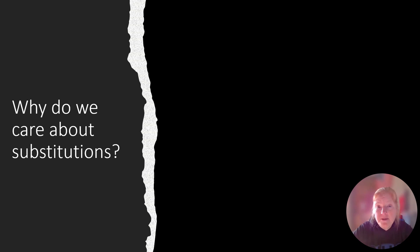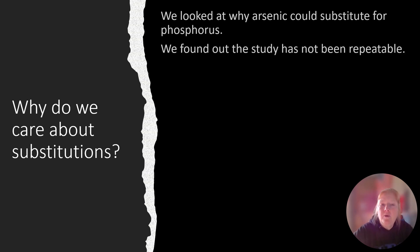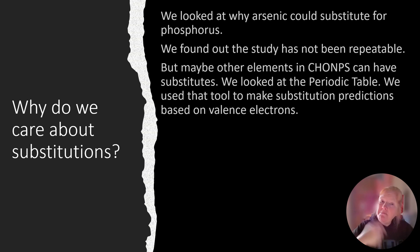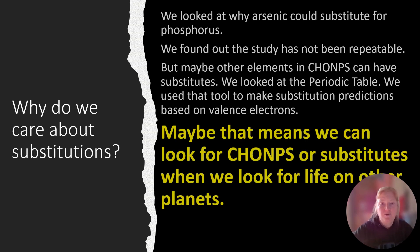So why do we care about substitutions? We looked at why arsenic could substitute for phosphorus, right, their location on the periodic table. We found out though that the study with the bacteria has not been repeatable. So in fact, it was not substituting, even though we thought it was. But maybe other elements in CHONPS can have substitutes. So although arsenic and phosphorus didn't work out, maybe there's another option. So we looked at the periodic table and we used that to make predictions about what elements could substitute for each other based on their valence electrons. So maybe that means we can look for other substitutes when we look for life on other planets. So maybe we're not looking for CHONPS only. Maybe we can look for other things.